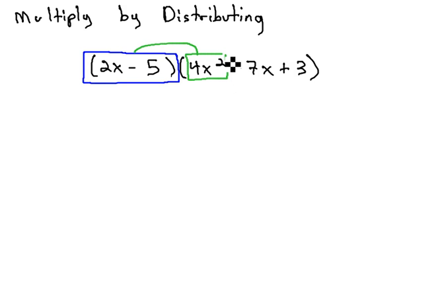Starting with the 4x squared, we will see the 4x squared in front of the 2x minus 5.